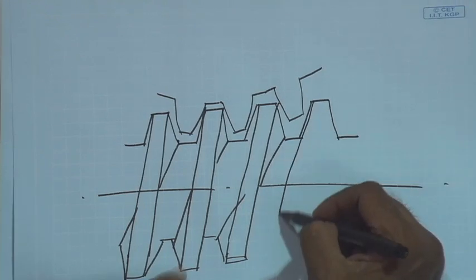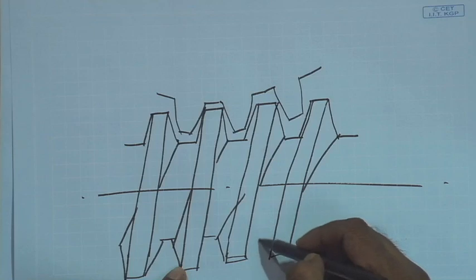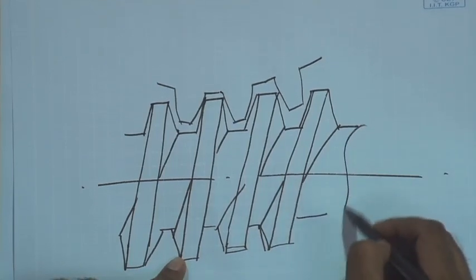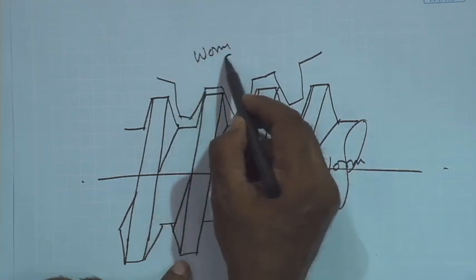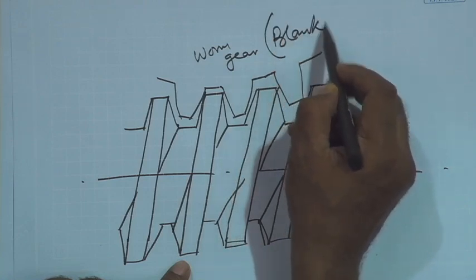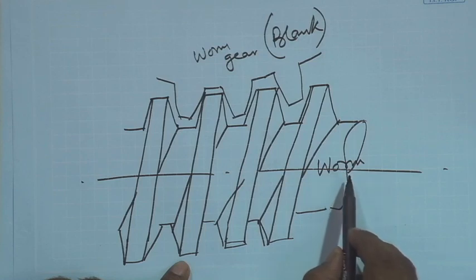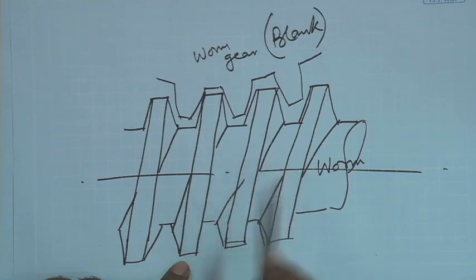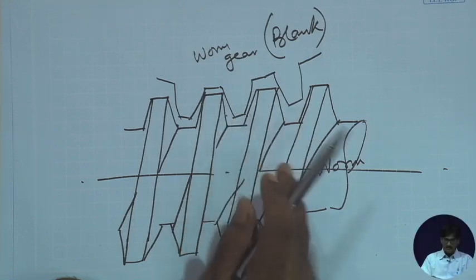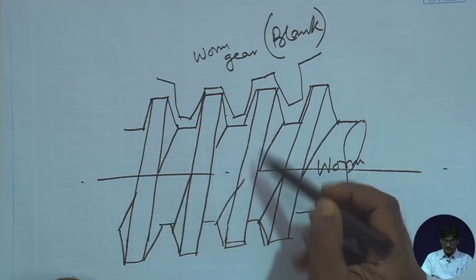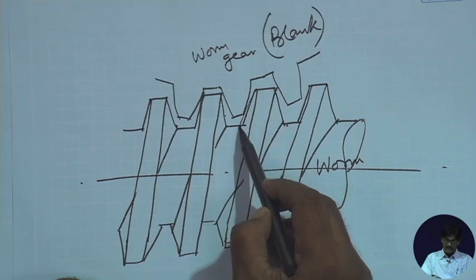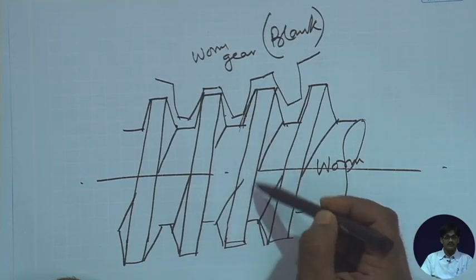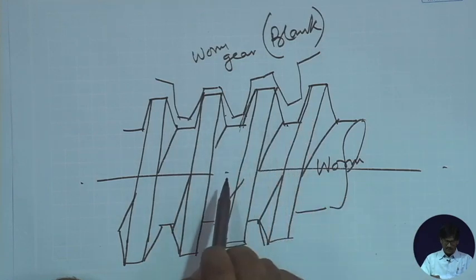This gives us the idea: why not employ the worm and worm gear arrangement to act as the cutting and cut element? The blank goes here so that a gear is cut instead of the worm gear, and the cutter here will look like a worm but with cutting edges produced on it. I wanted the rack — the rack has straight sides but finite length. So I replace it with a screw, a threaded element with the same cross section as the rack. I still have those straight sides which are easy to produce, and by virtue of rotation the endless rack is produced.